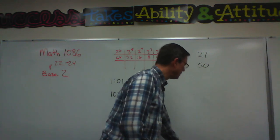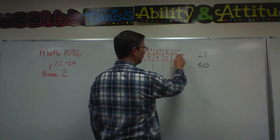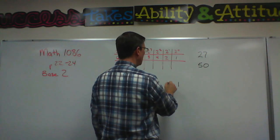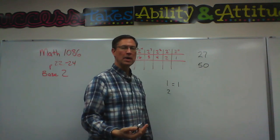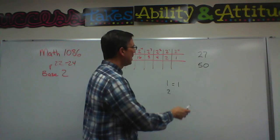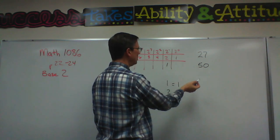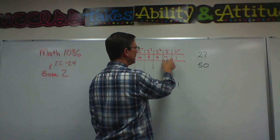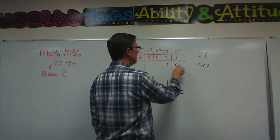With binary numbers, the first number is 2 to the 0, which is 1. So 1 is 1. The number 2 that we're used to, just counting 1, 2, 3, 4, 5, actually kicks it over into here, and I have one digit in the second column. So it would look like 1, 0.